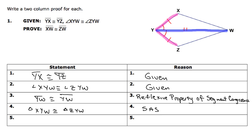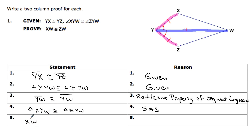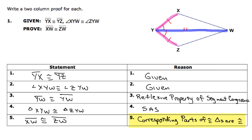Once I've got that, I'm going to go back and look at my prove. Whatever you've got to prove, that's always going to be your last step. So XW is going to be congruent to ZW. The reason — sometimes textbooks abbreviate it as CPCTC — means corresponding parts of congruent triangles are congruent. On some standardized tests, you'll see it written out: corresponding parts of congruent triangles are congruent. So that's it for example number one. Pretty straightforward: you've got a couple of pieces congruent, use a property to get another piece congruent, prove the two triangles congruent, then use CPCTC.